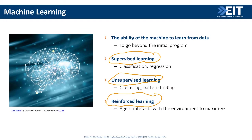In reinforcement learning, an agent interacts with the environment — think of it as a robot that can create sounds, push things around, and so on. The environment either punishes it or gives it rewards, and the agent wants to maximize its rewards. Through trial and error, always trying to increase its reward, it comes up with strategies — much like how we learn that we need to eat.